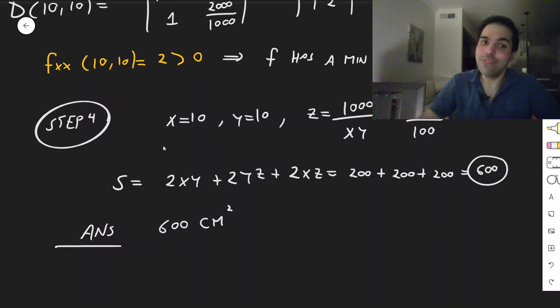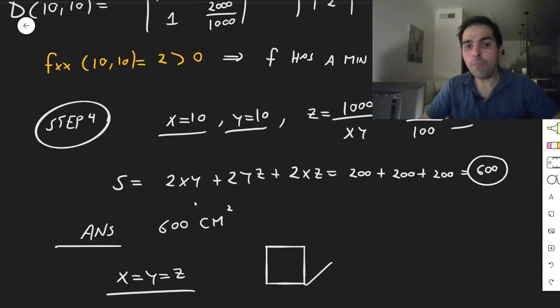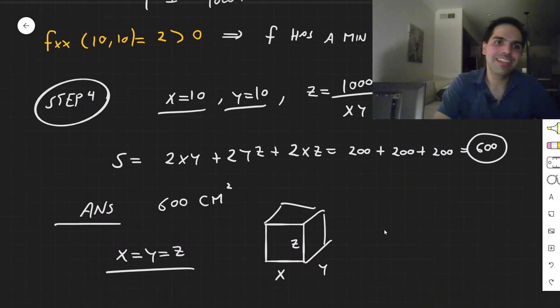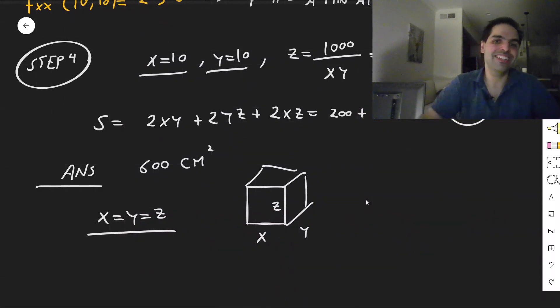All right, but we're not done, because this is the numeric answer, but more interesting, look what we found. We found that x is 10, y is 10, and z is 10. So in fact, x equals y equals z. So it turns out the optimal box is actually a cube. And this is very important in nature, kind of nature balances itself out until you actually get that the sides are all equal. So it's perfectly balanced, as things should be.